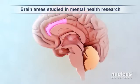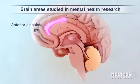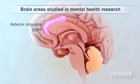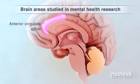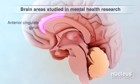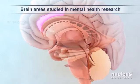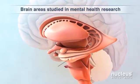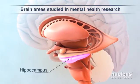The anterior cingulate cortex helps you focus on tasks and control emotions. The hippocampus helps make and store new memories.